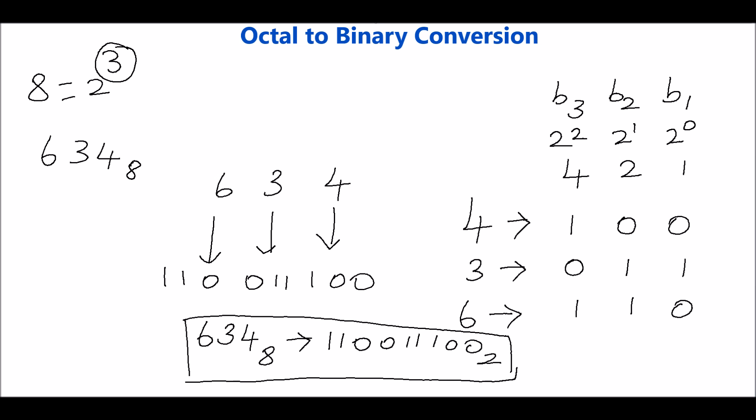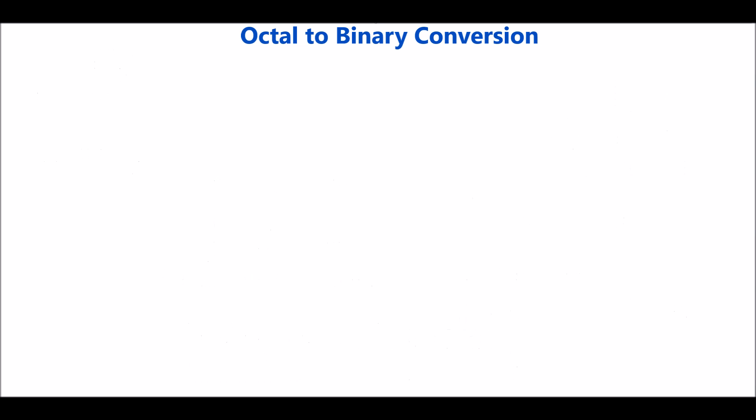This octal number 634 doesn't have any fractional part, so let's see another example with the fractional part. Let's take an example 726.64₈. First individual digit should be converted into corresponding binary number, so the b1, b2, b3 bits are required, the weights are 1, 2, 4 in binary.